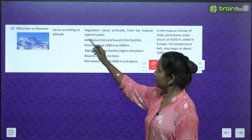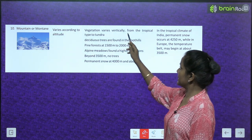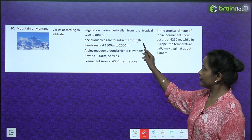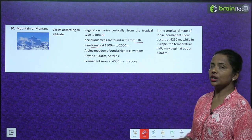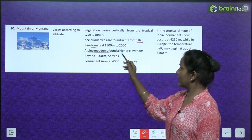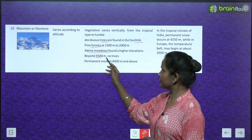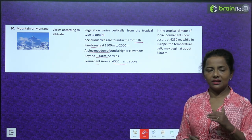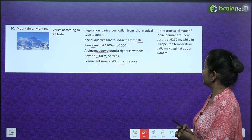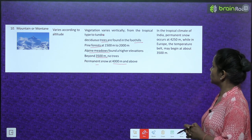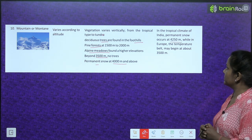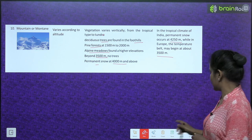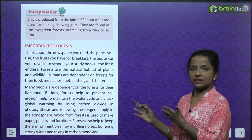The last biome is mountain or montane. Vegetation varies according to altitude — vertically from the tropical type to tundra. Deciduous trees are found in the foothills; pine forests at 1500 to 2000 meters; alpine meadows at higher elevations. Beyond 3500 meters, there are no trees. Permanent snow at 4000 meters and above. In the tropical climate of India, permanent snow occurs at 4250 meters, while in Europe the snowline may begin at about 3500 meters.